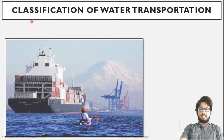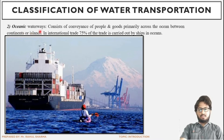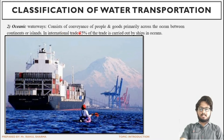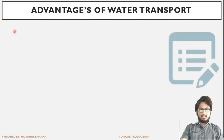Oceanic waterways consist of the transportation of people and goods primarily across the ocean — between continents or between islands. International trade takes place through oceanic waterways, while national trade within the same country uses inland waterways. Approximately 75 percent of total international trade is carried out by ships in oceans, and import-export operations between countries occur via oceanic waterways.